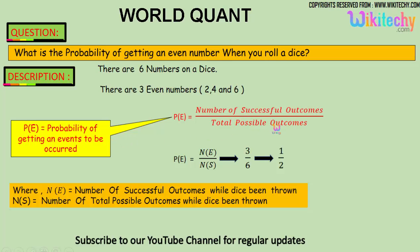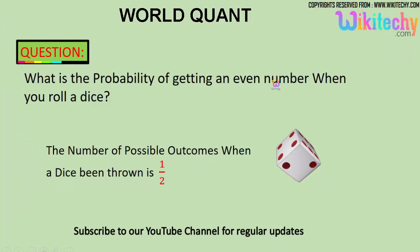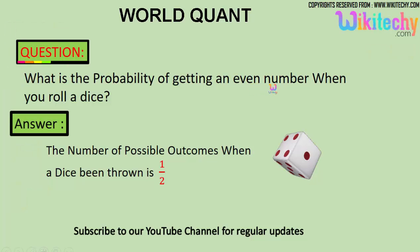Three is the number of successful outcomes, divided by the total possible outcomes which is six. So three divided by six gives you one by two. The probability of getting an even number when you roll a dice is one by two — that's the answer.